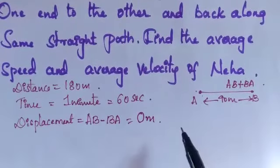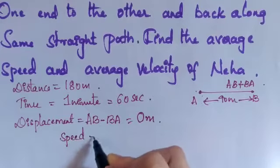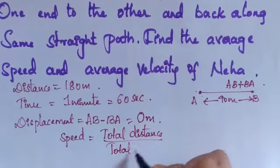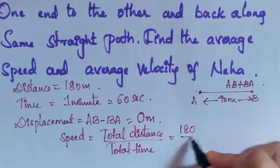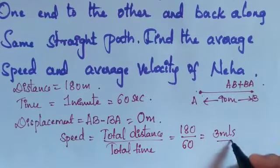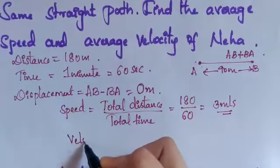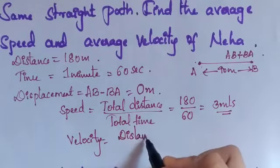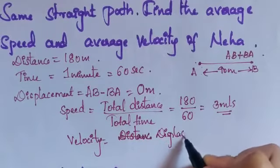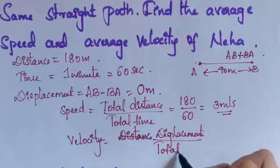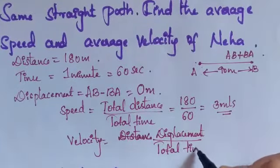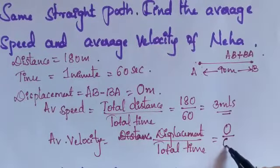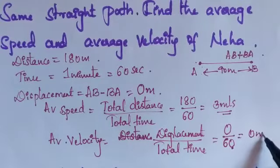Now we can find the average speed. Average speed equals total distance traveled divided by total time taken. Total distance is 180 meters divided by 60 seconds, giving average speed of 3 meters per second. For average velocity, we use displacement divided by total time taken. Displacement is 0, divided by 60 seconds, giving average velocity of 0 meters per second.